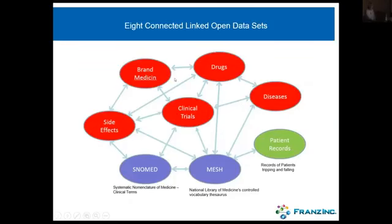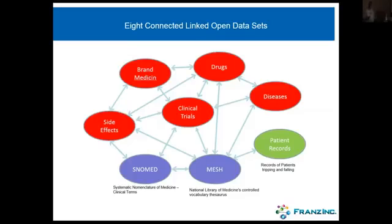Clinical trials talk about diseases, diseases talk about drugs linked to diseases, drugs link to brand medicine and to side effects — it's all a big graph pointing to each other. I also have 3,000 patient records indexed with Mesh and SNOMED. In the hospital world, if you want to do anything interesting, you need to use the same word for the same thing. The hospital world has about eight or nine different terminology systems — two very important ones are Mesh and SNOMED. I use those to index the patient records and all the unstructured text in clinical trials, so now everything fits together.